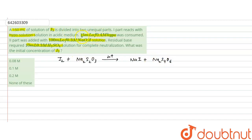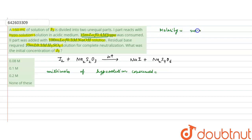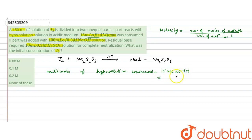It is given that 15 mL of 0.4 molar hypo was consumed. We can calculate the millimoles of Na₂S₂O₃ consumed using molarity equals moles of solute per volume in liters. Since volume is in milliliters, multiplying molarity by volume gives millimoles. So millimoles of hypo = 15 mL × 0.4 M = 6 millimoles.